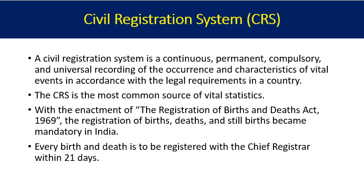The civil registration system is the primary source for vital statistics, giving us information about the numerator — the number of deaths and births. A civil registration system is a continuous, permanent, compulsory, and universal recording of the occurrence and characteristics of vital events in accordance with the legal requirements of a country. It is compulsory, universal, and a continuous process — as births happen they are recorded, as deaths happen they are recorded.